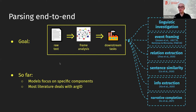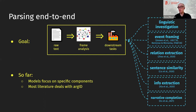End-to-end means going from raw text to frame structures and then using those for something. Most models don't look at the problem this way but at specific components. The overwhelming majority of existing work deals with argument identification specifically, which is interesting and difficult, but if you want to actually use your automatic frame analysis for something, you also want to look at the task as a whole — and that's what we're doing.